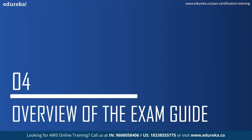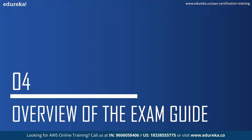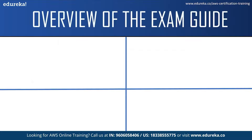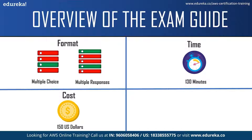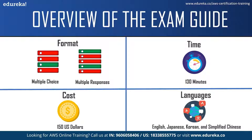Now let us move on to the next topic and see the overview of the exam guide, which is for the associate level certification. In the format, you will have two types of questions: multiple choice and multiple responses. In multiple choice, there is one correct answer out of four options. In multiple responses, there are two correct answers out of five options. The time for this examination is 130 minutes and the cost is 150 US dollars. You can write this examination in either English, Japanese, Korean, or simplified Chinese.